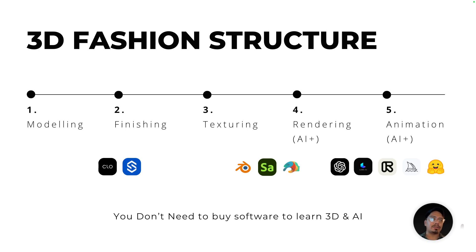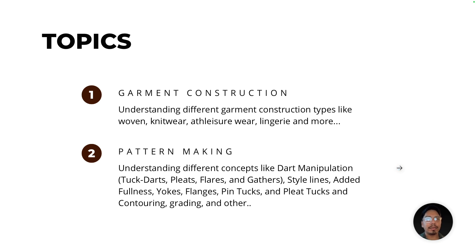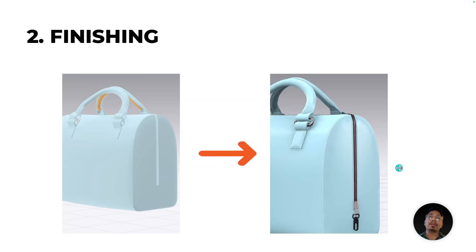The five stages in 3D fashion are: modeling, finishing, texturing, rendering, and animation. The first stage is modeling — you take a basic shape and convert it into a desired shape. The two most important concepts in modeling are garment construction, understanding how different kinds of garments are constructed, and pattern making. Pattern making is the most important part because if you want to change the shape of your design, you need to understand it.